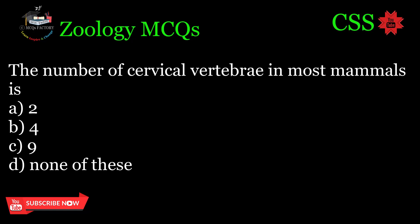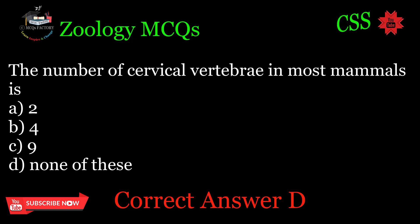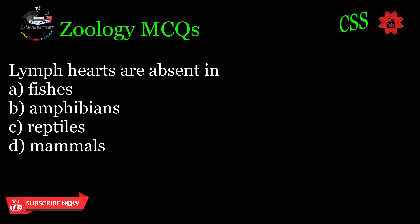The number of cervical vertebrae in most mammals is: A. 2, B. 4, C. 9, D. None of these. Correct answer: D.